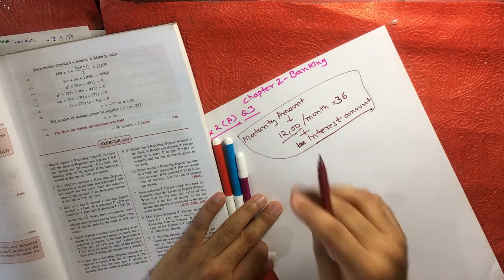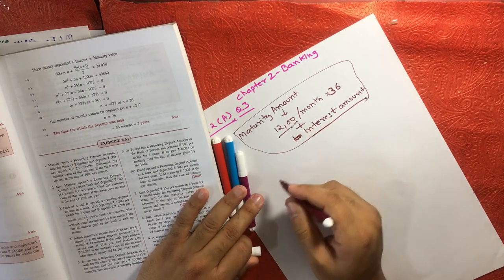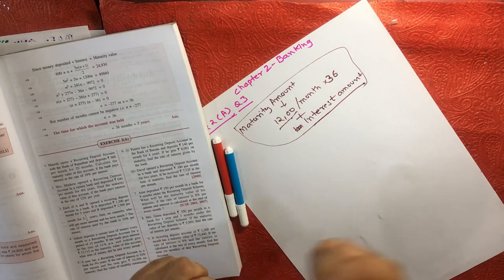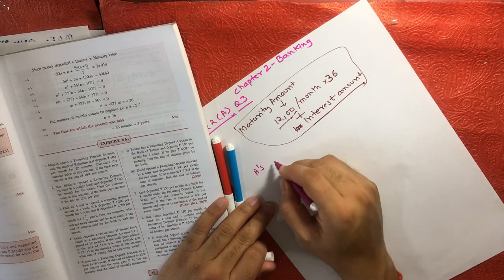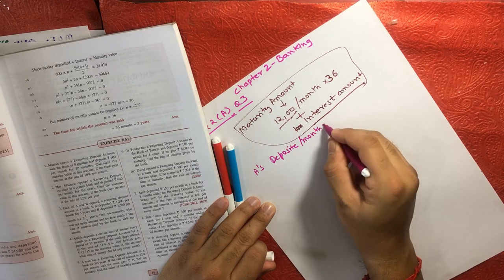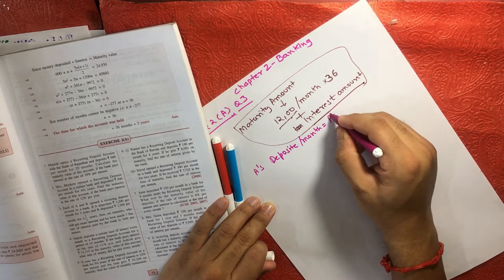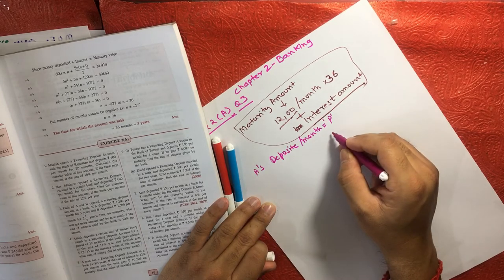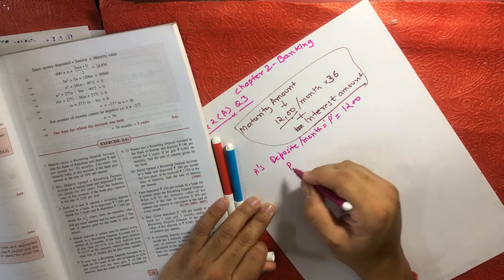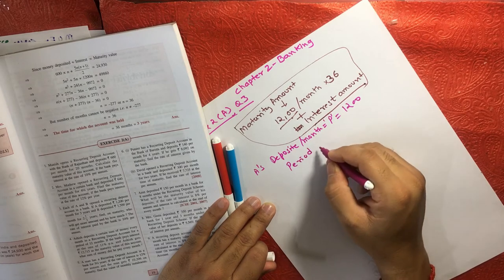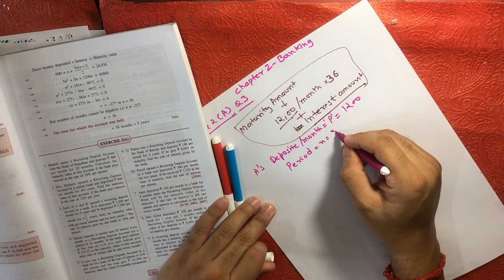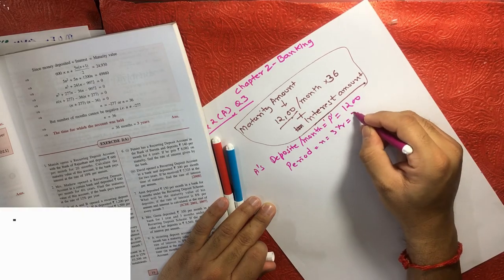Now let's note the given values for A. Deposit per month, represented as P, is equal to 1200 rupees. The period, represented as n, is 3 years, which equals 36 months.